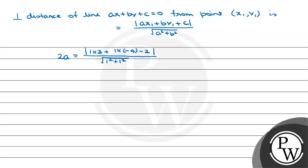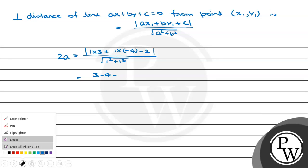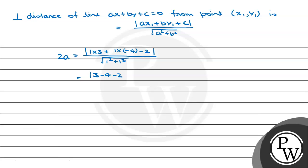That will be equal to 1 times 3 is 3, 1 times (-4) is (-4), so that will be 3 minus 4 minus 2, mod of this upon root 2. That equals mod of (-3), which is 3 upon root 2. That is the value of 2a.